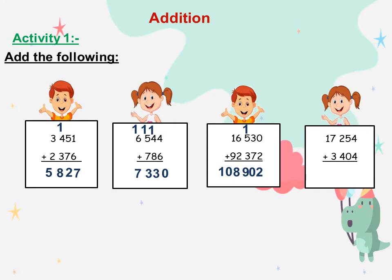The next: 17,254 plus 3,404. Ones with ones: 4 plus 4 equals 8. 5 plus 0 equals 5. 2 plus 4 equals 6. 7 plus 3 equals 10, so we will write 0 and carry up 1. 1 plus 1 is 2. Excellent.